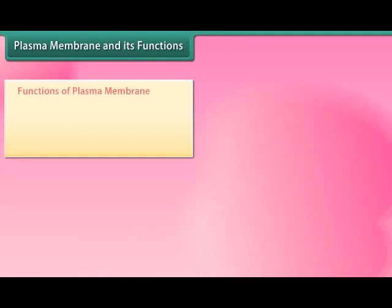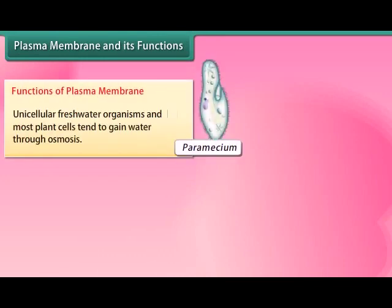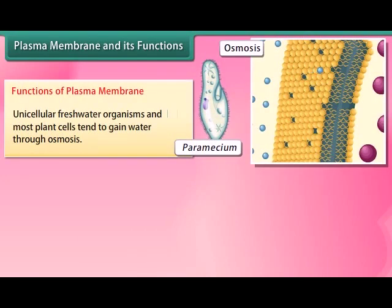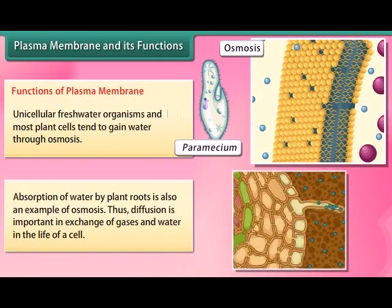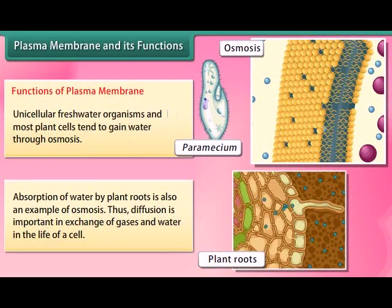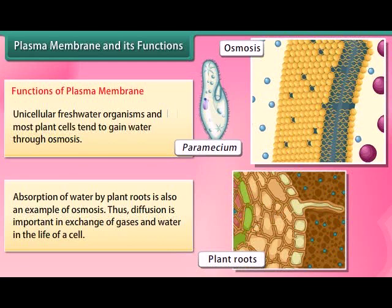Unicellular freshwater organisms and most plant cells tend to gain water through osmosis. Absorption of water by plant roots is also an example of osmosis. Diffusion is important in the exchange of gases and water in the life of a cell.